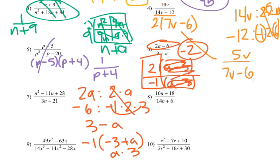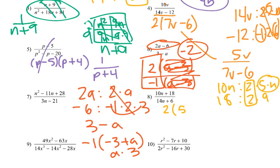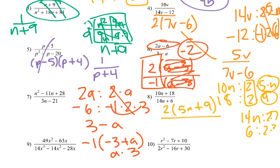Same idea for number 8. I've got 10n and 18 — that's like 2 times 5 times n, and 2 times 9. So I can pull out a 2 and have 2 times 5n plus 9 over 14n and 6. That's like 2 times 7 times n and 2 times 3, so 2 times 7n plus 3. We can eliminate the 2's, and then we're left with 5n plus 9 over 7n plus 3, and we can't simplify that further.